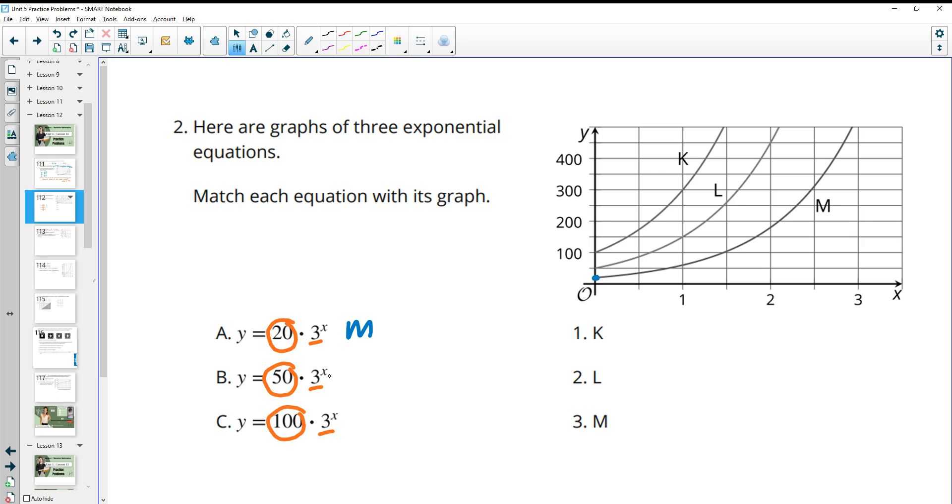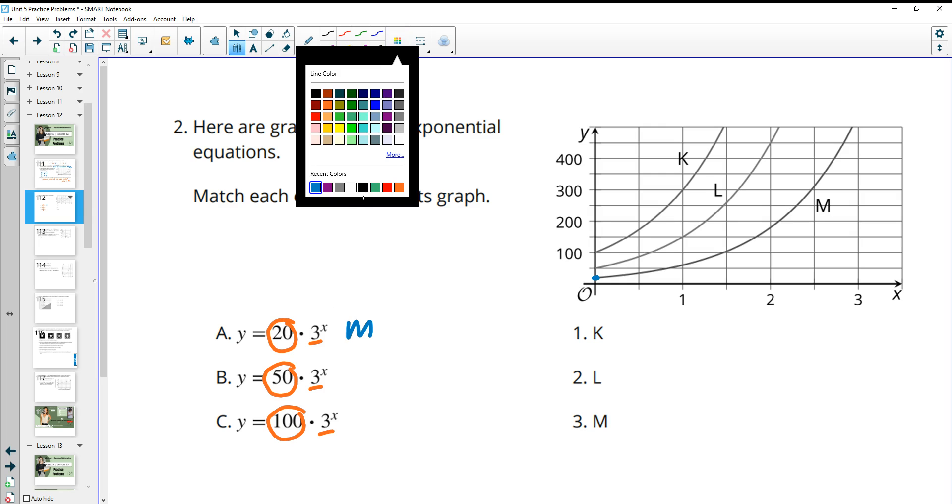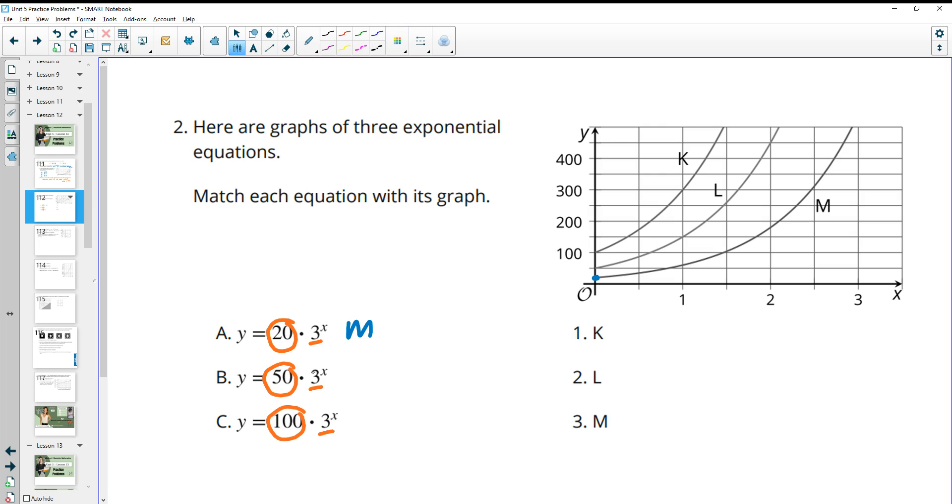Then b is at 50, so that's the middle one. So that's going to be graph l. And then that leaves the 100 as the highest starting value, which is k.